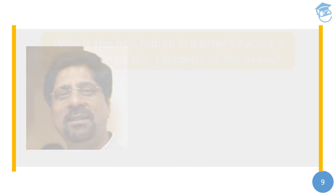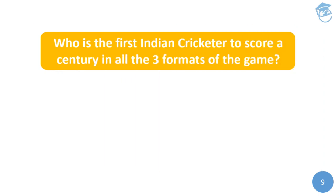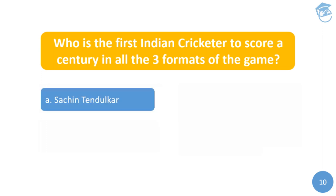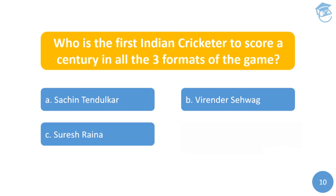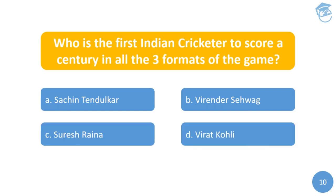The last question: Who is the first Indian cricketer to score a century in all three formats of the game? Options are: A) Sachin Tendulkar, B) Virender Sehwag, C) Suresh Raina, or D) Virat Kohli.